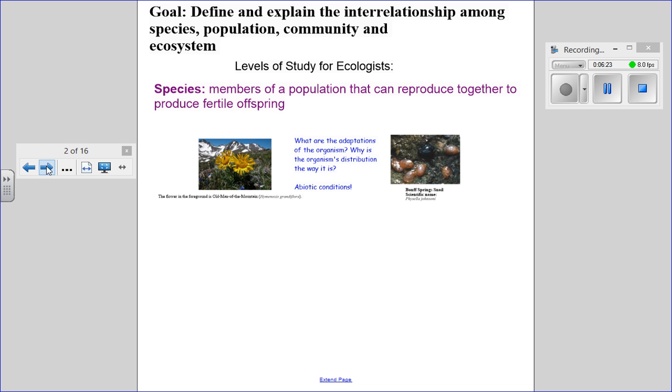Our goal for the next section is to define and explain the interrelationship among four words: species, population, community, and ecosystem. Ecosystem is the really big, broad term, whereas species is much more specific. We'll start with species and work our way up. If an ecologist were studying a species, we'd focus on members of a population that can reproduce together and make fertile offspring.